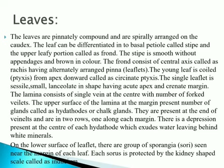On the rachis, pinnae are arranged on both sides, similar to a neem leaf. The young leaf is coiled from apex downward, called circinate vernation. The single leaflet is small, lanceolate in shape, with acute apex and serrate margin. The lamina consists of a single central vein with a number of forked veinlets.